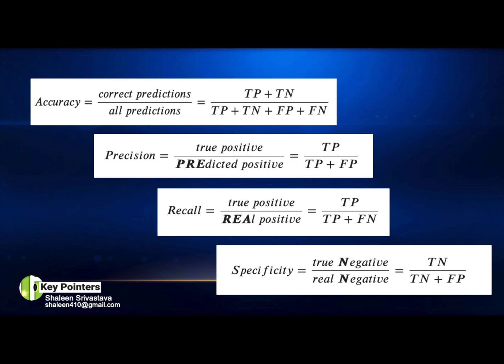Accuracy is true positive plus true negative divided by true positive plus true negative plus false positive plus false negative. Precision is true positive divided by true positive plus false positive. Recall is true positive divided by true positive plus false negative. Specificity is true negative divided by true negative plus false positive. These four optimization metrics are very important for understanding any end-to-end machine learning project.